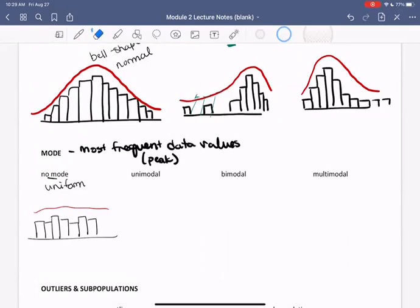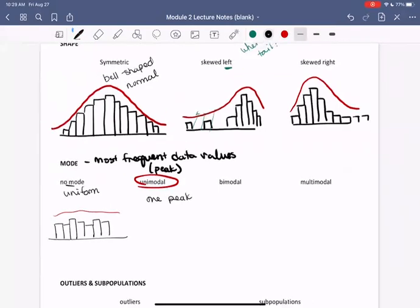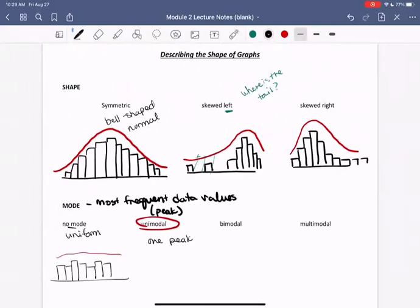Unimodal graphs are graphs which contain one mode or one peak. So can you think of any shapes of graphs that are unimodal? And right on, all of the three graphs that we already looked at are unimodal. There's one peak.